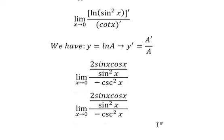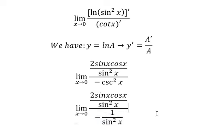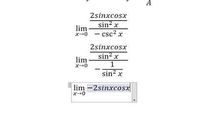And now we can simplify this one. That is about 1 over sine squared x. Now we simplify sine squared x, and we have negative 2 sine x cosine x.